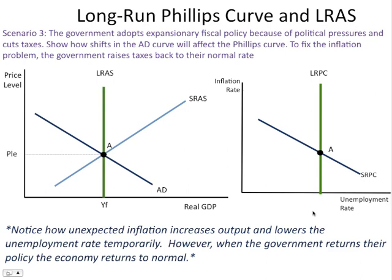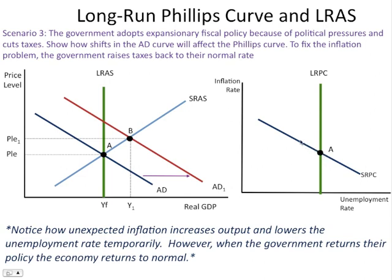Scenario three: the government adopts expansionary fiscal policy due to political pressure and cuts taxes, giving people more money to spend. This shifts the aggregate demand curve to the right. On the SRPC and LRPC model, a shift to the right of aggregate demand causes movement along the SRPC to the left — showing higher prices and an increase in output levels as demand-pull inflation provides the ability to produce more temporarily. From A to B, we see that temporary increase in output, with rising prices and a reduction in unemployment as GDP increases.